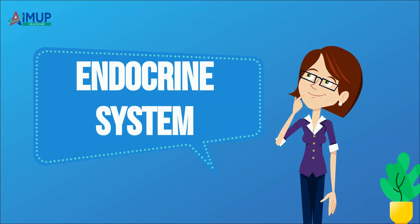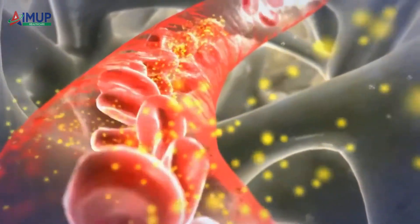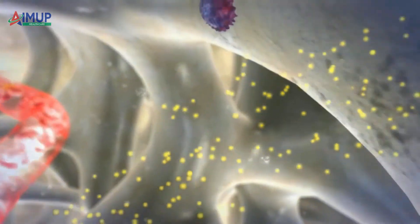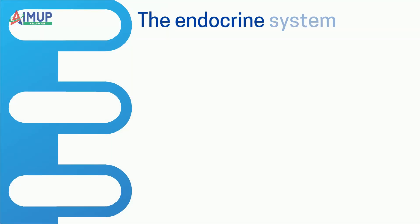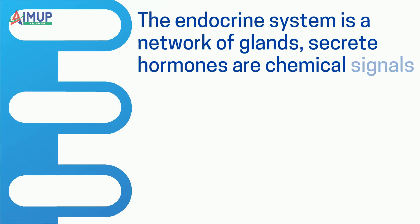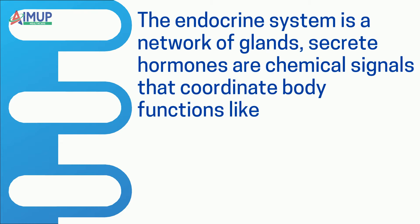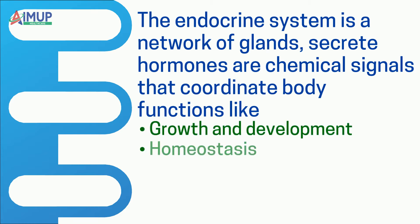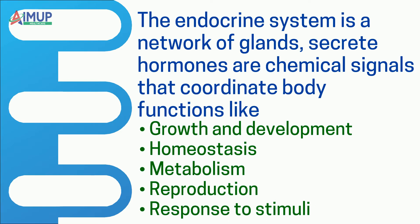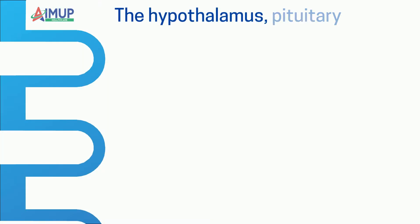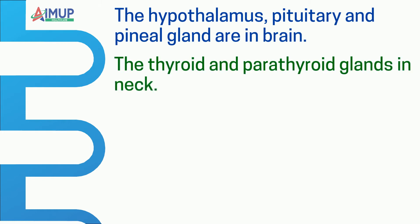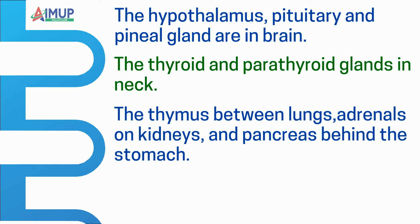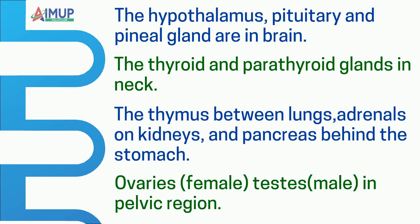The endocrine system is a network of glands that secrete hormones — chemical signals that coordinate body functions like growth and development, homeostasis, metabolism, reproduction, and response to stimuli. The hypothalamus, pituitary, and pineal gland are in the brain. The thyroid and parathyroid glands are in the neck. The thymus is between the lungs, adrenals are on the kidneys, and the pancreas is behind the stomach. Ovaries (female) and testes (male) are in the pelvic region.